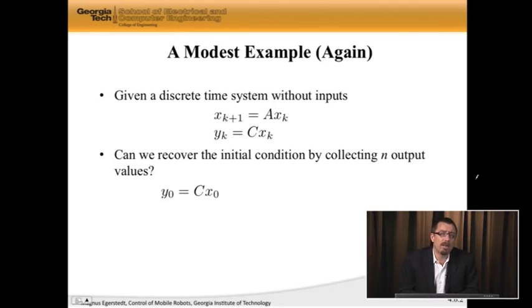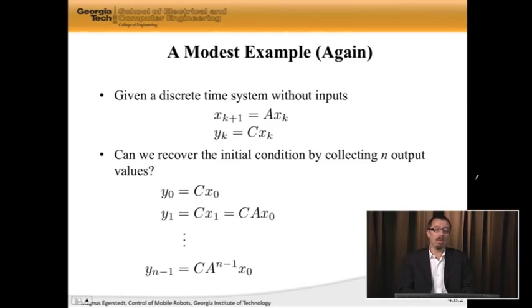At time 0, the output is simply c times x naught. At time 1, the output is c times x1. Well, x1 is a times x naught, so the output at time 1 is ca x naught, and so forth.